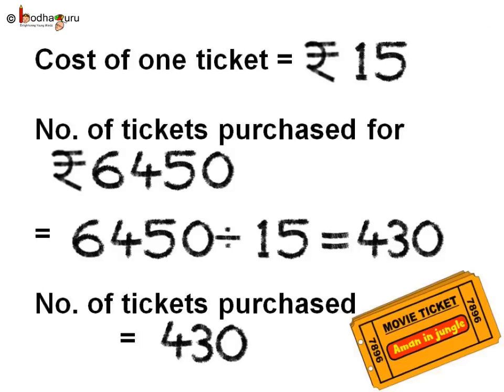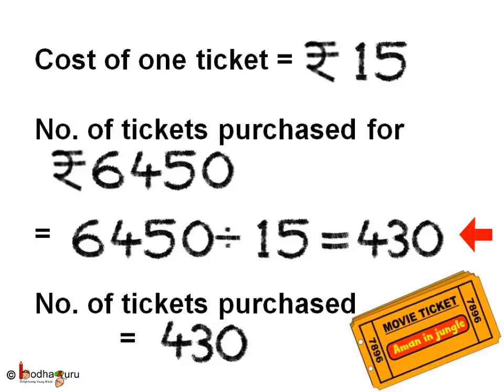Let us see again how we solve this problem. Cost of one ticket is equal to 15 rupees. The number of tickets that can be purchased for 6,450 rupees is equal to 6,450 divided by 15, which is equal to 430. Thus the number of tickets purchased is equal to 430.